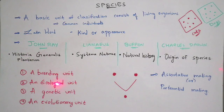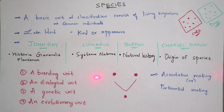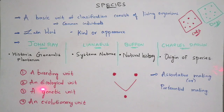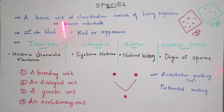The first one is a breeding unit. Breeding unit means it is reproductively isolated from individuals of other species — that is, it is kept far away from the individuals of other species. The second one is an ecological unit. An ecological unit means all of these individuals will share the same ecological environment.